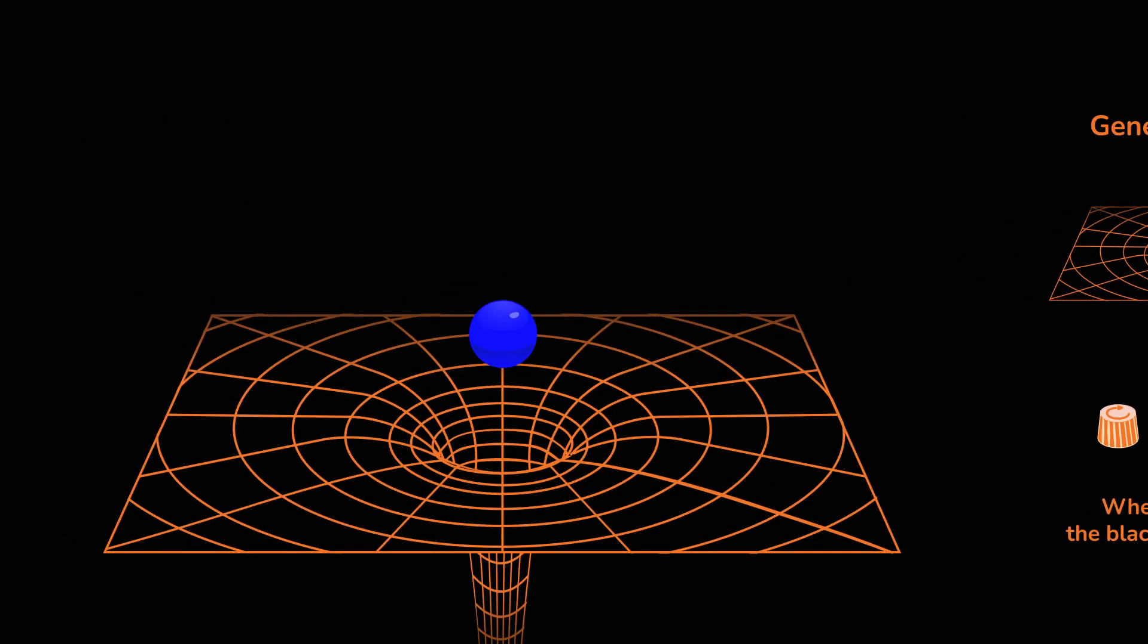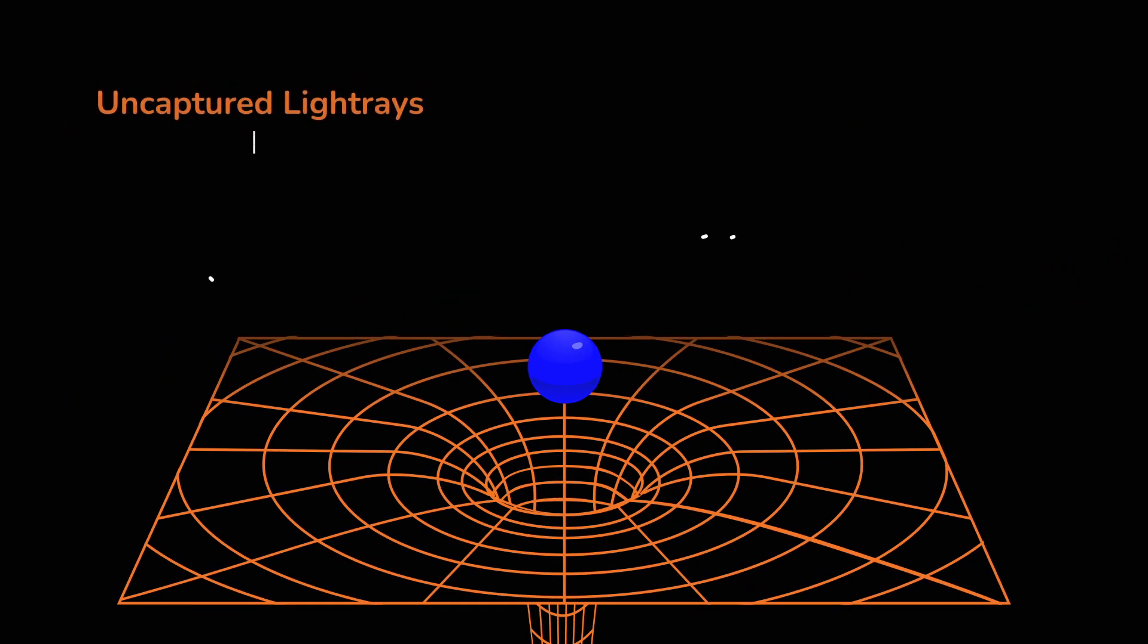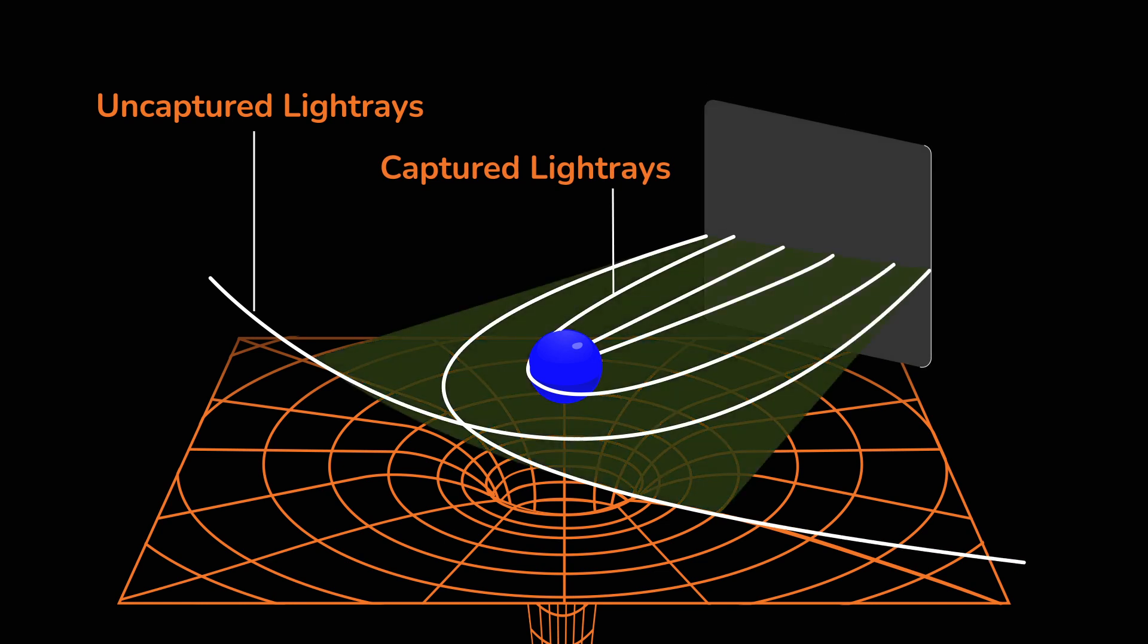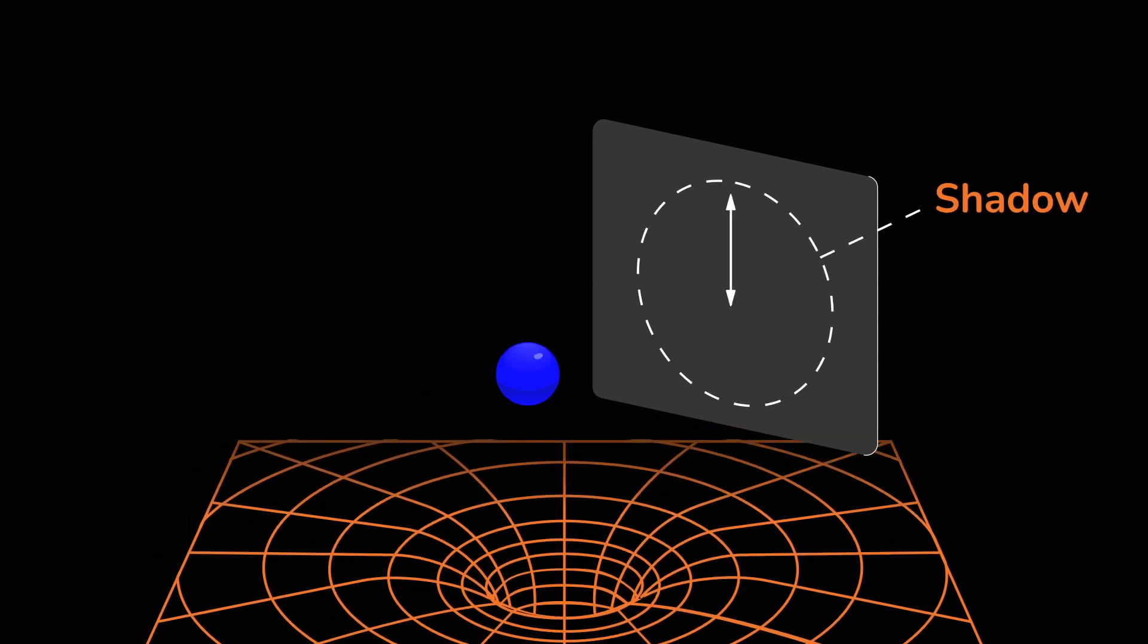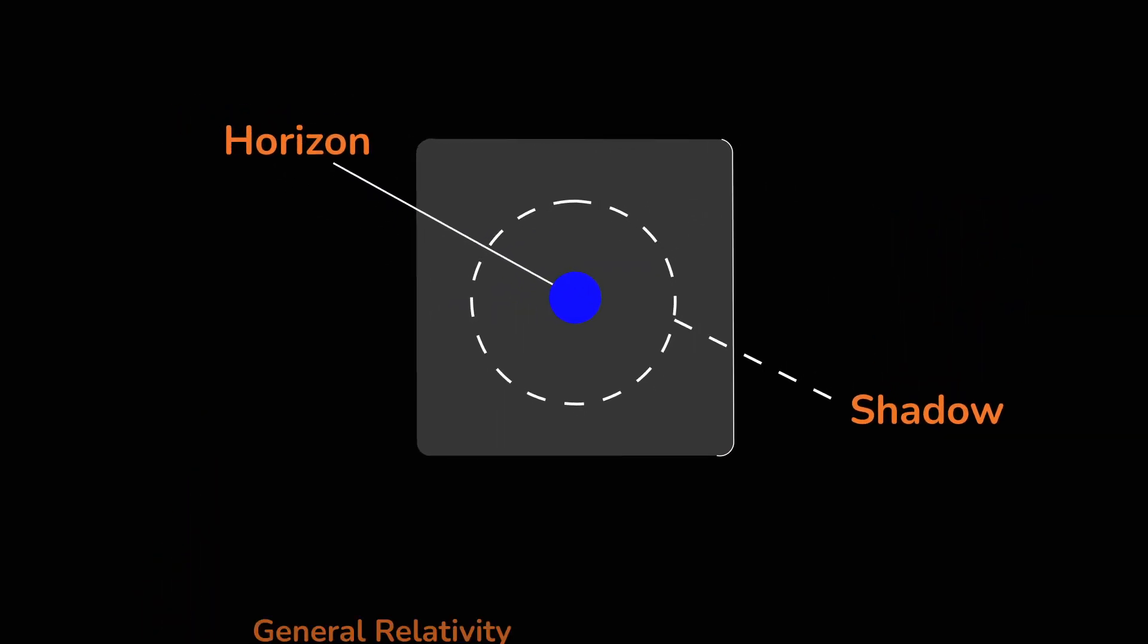Curved spacetime forces light rays to bend. Rays that closely approach the black hole are captured by it. Therefore, these directions appear dark to a faraway astronomer. This dark region is the shadow of a black hole. Smaller black holes cast smaller shadows.